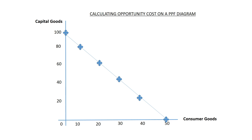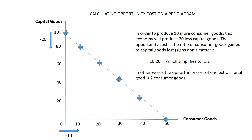We can actually calculate opportunity costs just from a PPF diagram. In order to produce 10 more consumer goods, I would have to produce 20 fewer capital goods. Calculating the opportunity cost comes down to a simple ratio. In order to produce 10 more consumer goods, I'm sacrificing 20 capital goods. The opportunity cost is the ratio of consumer goods gained to capital goods lost. In this case, the opportunity cost of producing 10 more consumer goods would be 20 capital goods. The ratio 10 to 20 simplifies to 1 to 2, so the opportunity cost of producing one extra consumer good is two capital goods.